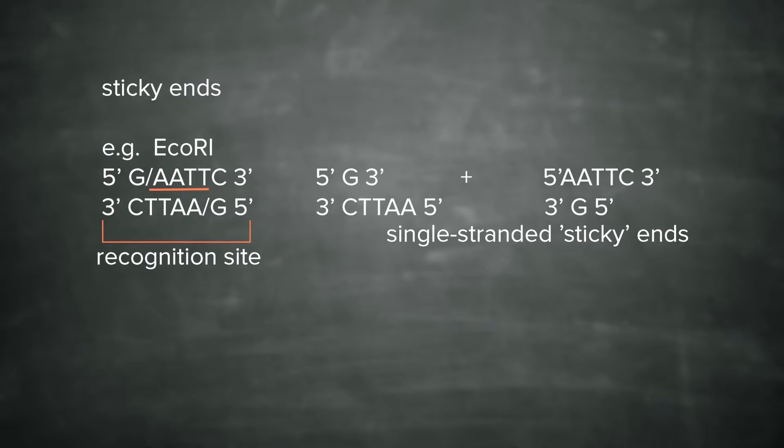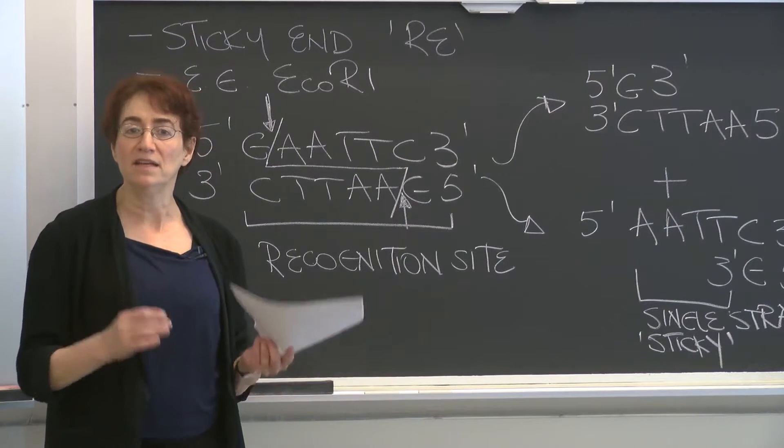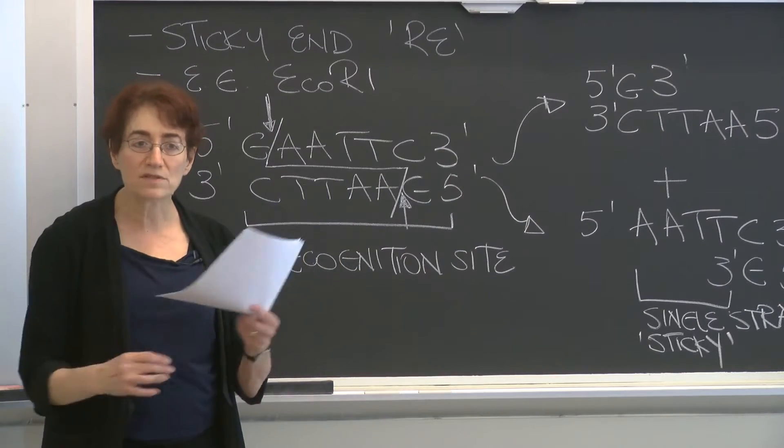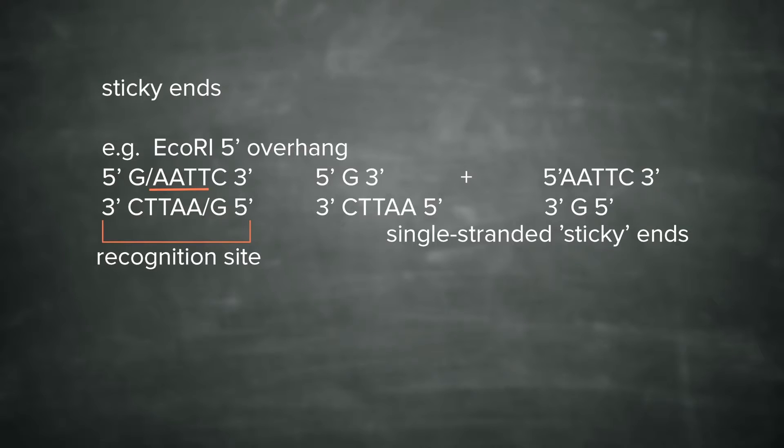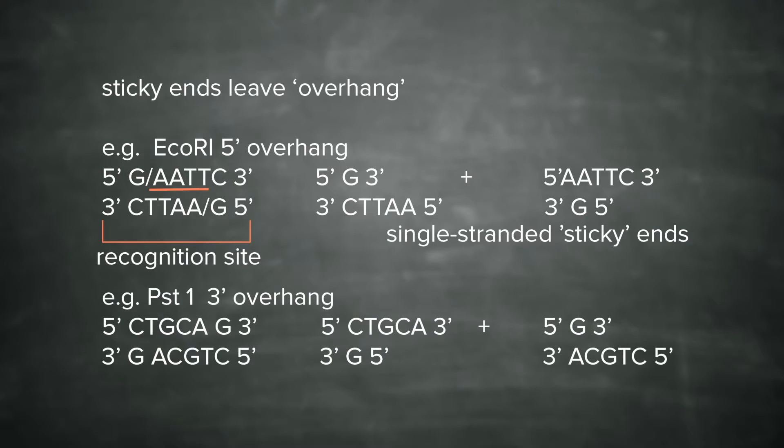EcoR1 leaves a 5' overhang. That means that there is more DNA towards the 5' end than the 3' end in the sticky cut. There are also enzymes, and I'll show you on a slide in a moment, that leave a 3' overhang. So this region here is a 5' overhang. And there are both 5' and 3' overhang sticky-ended restriction endonucleases.